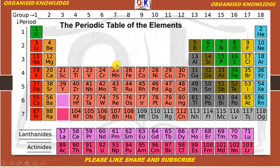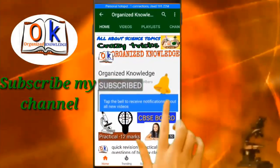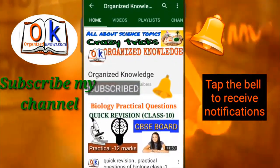Ab hum dhatu aur adhatu ke baare mein padh chuke hain. Metals aur non-metals aapko clear hai ki kya unki mainly physical characteristics — yaani bhotik gunon ke aadhar par — woh kya hote hain. Aur inhi gunon ke aadhar par jo tatwa hain unko hum three categories mein divide kar sakti hain — woh categories kya kya hain? Woh categories hain: metals, non-metals, and metalloids. Yeh hai periodic table of elements yaani tatwa ki avart saarni, kis prakar se hum dhatu, adhatu aur up-dhatu hoon ko unki characteristics ke base pe arrange kar sakti hain. So yeh thi physical characteristics of metals and non-metals. Next part mein hum chemical properties ke baare mein padhenge. Thanks for watching, stay home, stay safe. Milte hain second part mein — chemical properties of metals and non-metals.